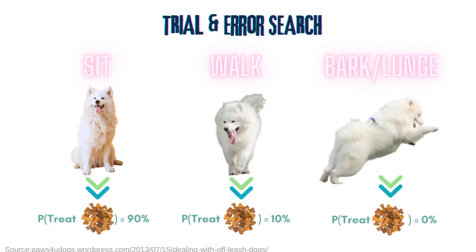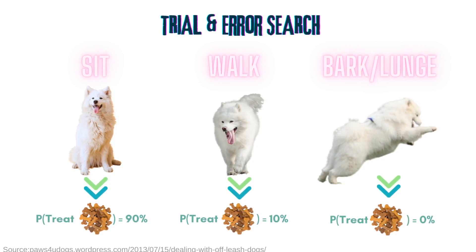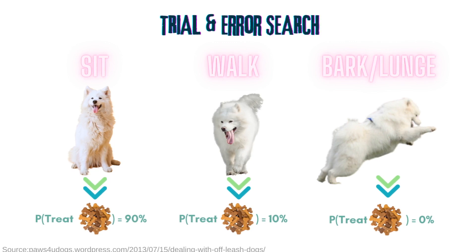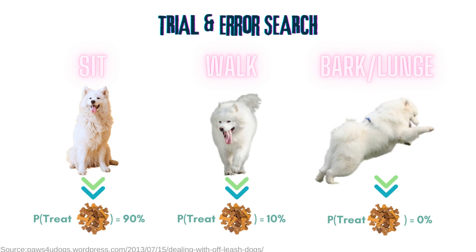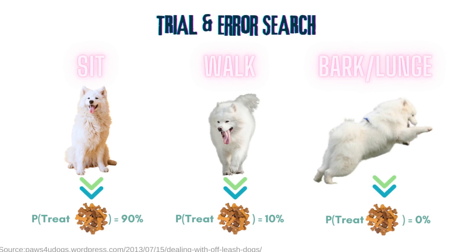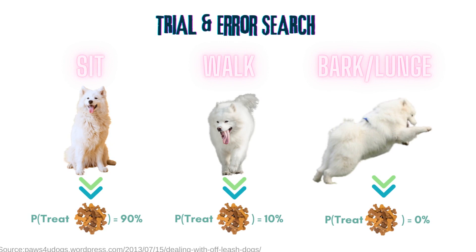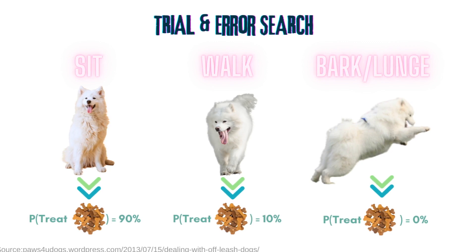How does Pav know for a given state which action would provide the most reward? She doesn't know, but she can try different actions under different states and see what the probability of getting a treat is. For example, she might find that in a state where Mochi is staring at her, if she chooses to sit she gets a treat 90% of the time, if she chooses to keep walking she gets a treat 10% of the time, and if she chooses to bark or lunge she will not get any treats. However, if she tries these three actions when Mochi is not there, she might find that the probabilities of getting treats are lower — if Pav just randomly sits down during a walk with no stimulants, Mr. Stick might not want to encourage that and offer no rewards.